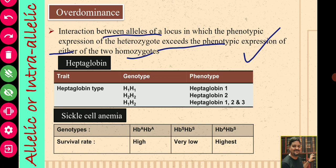In haptoglobin, when the genotype is H1H1, the phenotype will be haptoglobin H1. When it is H2H2, the phenotype will be haptoglobin 2. But when it is H1H2 — both alleles are present — the phenotype will be H1, H2, and H3; one more phenotype will be there. So haptoglobin 1, 2, and 3 are produced. If you are not remembering what haptoglobin is, go to your physiology notes.